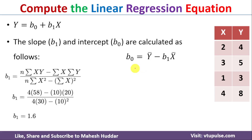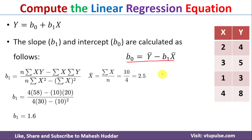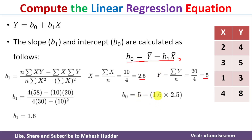Next we find b0 using the formula b0 = ȳ − b1·x̄. We know b1 = 1.6. To find x̄: x̄ = Σx / n = 10 / 4 = 2.5. To find ȳ: ȳ = Σy / n = 20 / 4 = 5. Substituting into the formula: b0 = 5 − 1.6 × 2.5 = 1.